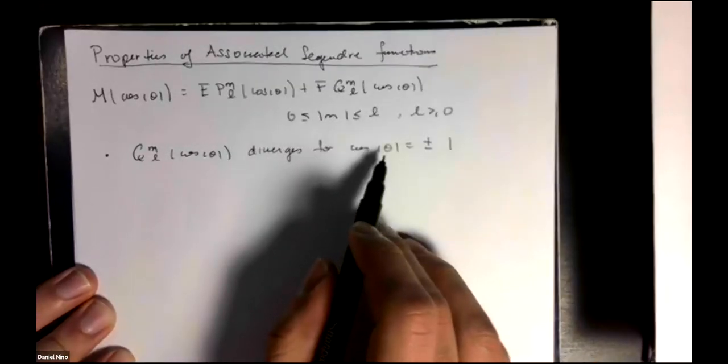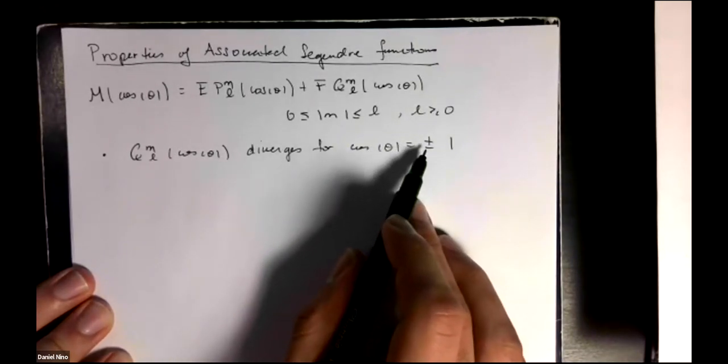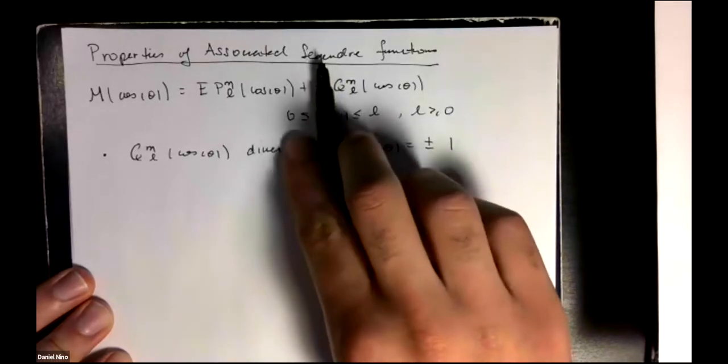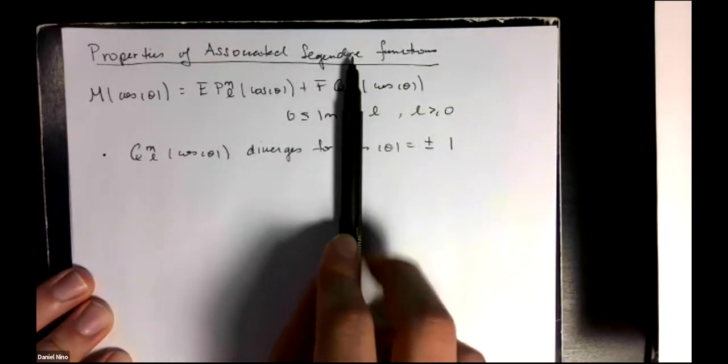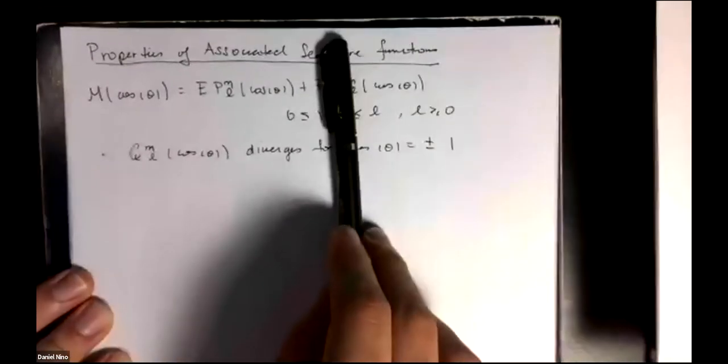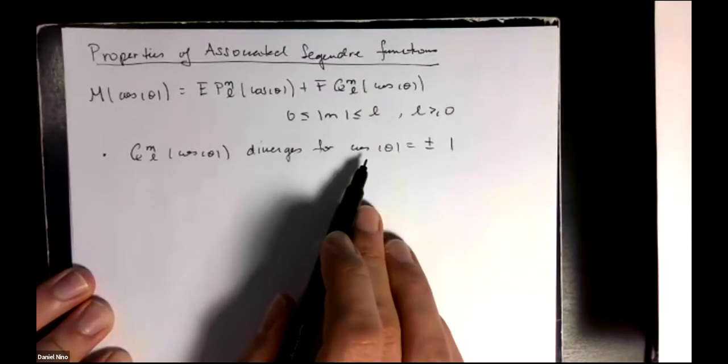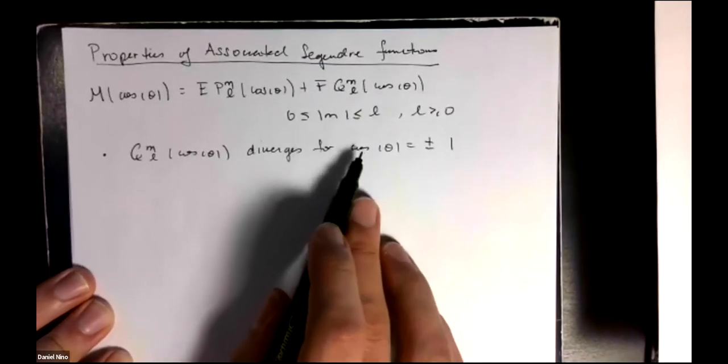And remember theta is the azimuthal angle on a sphere, so a cosine of plus or minus one means either an azimuthal angle of zero, so it's like that on the sphere, or an azimuthal angle of pi, which is at the other side of the sphere, the bottom side of the sphere. And there's very few problems that we'll encounter where this condition will be excluded.